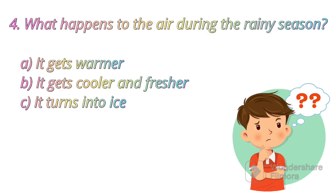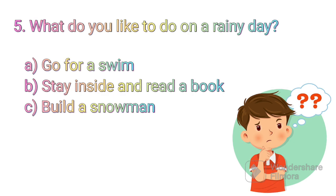Now the fourth question. What happens to the air during the rainy season? A. It gets warmer. B. It gets cooler and fresher. C. It turns into ice. Which is the right answer? It is: it gets cooler and fresher.